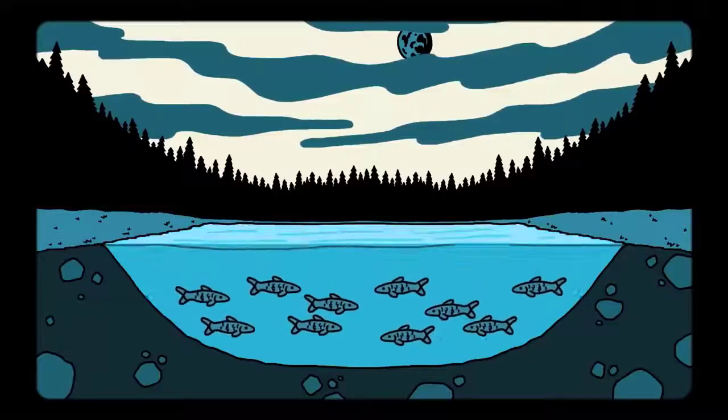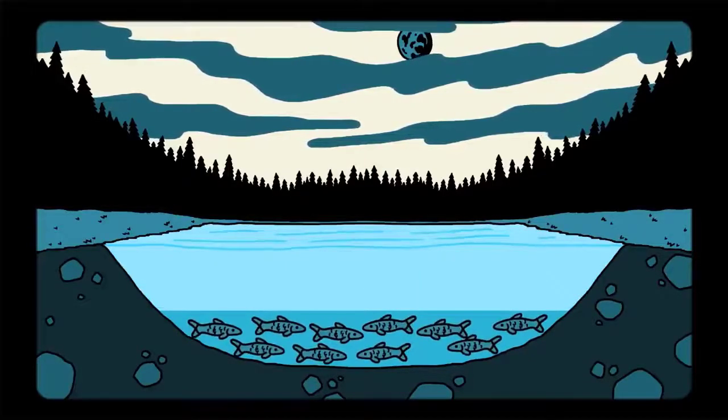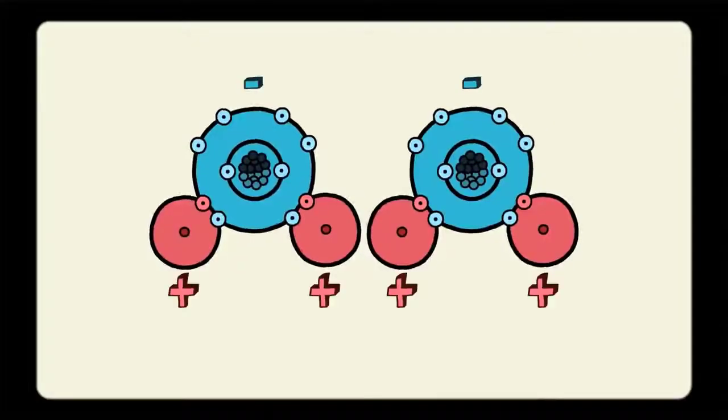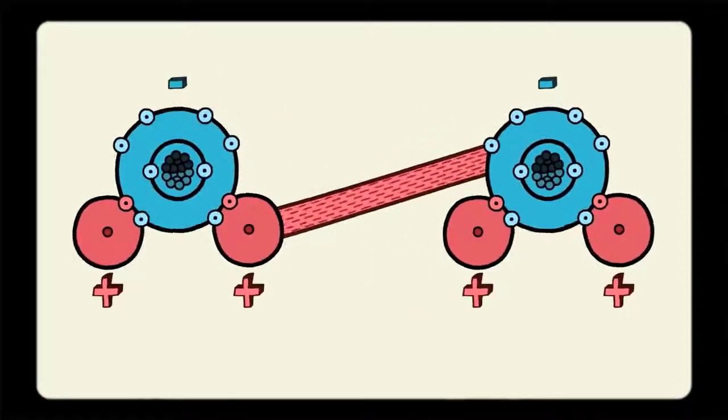That's why lakes freeze from the top down and aquatic life is able to survive through a cold winter every year. It is the polarity of the water molecule and the resulting hydrogen bonding that account for water's unique properties.